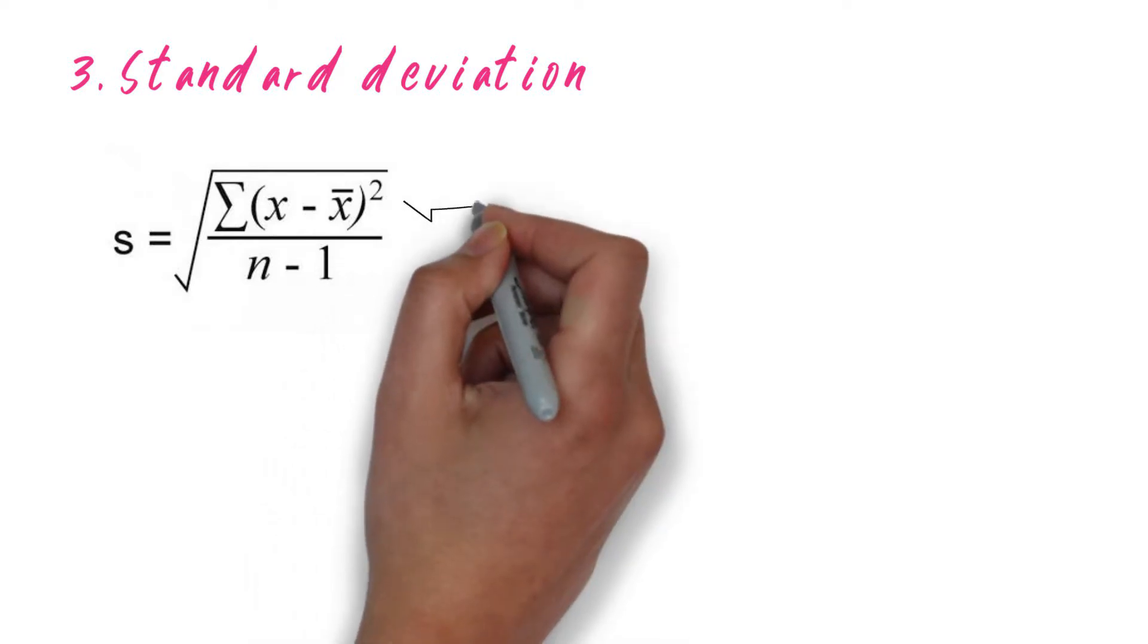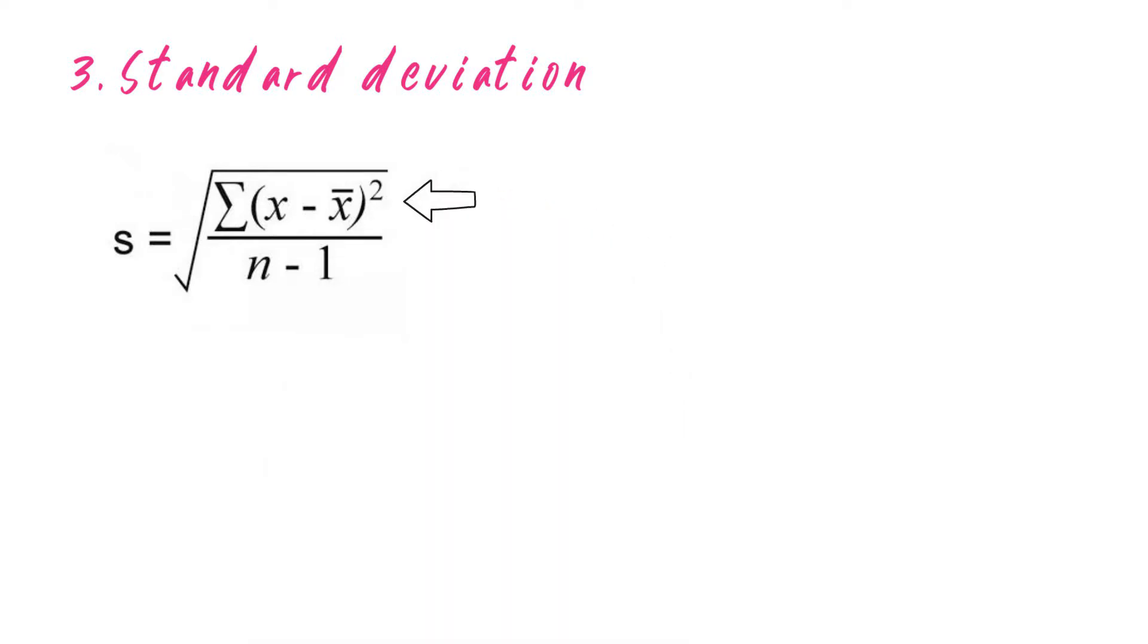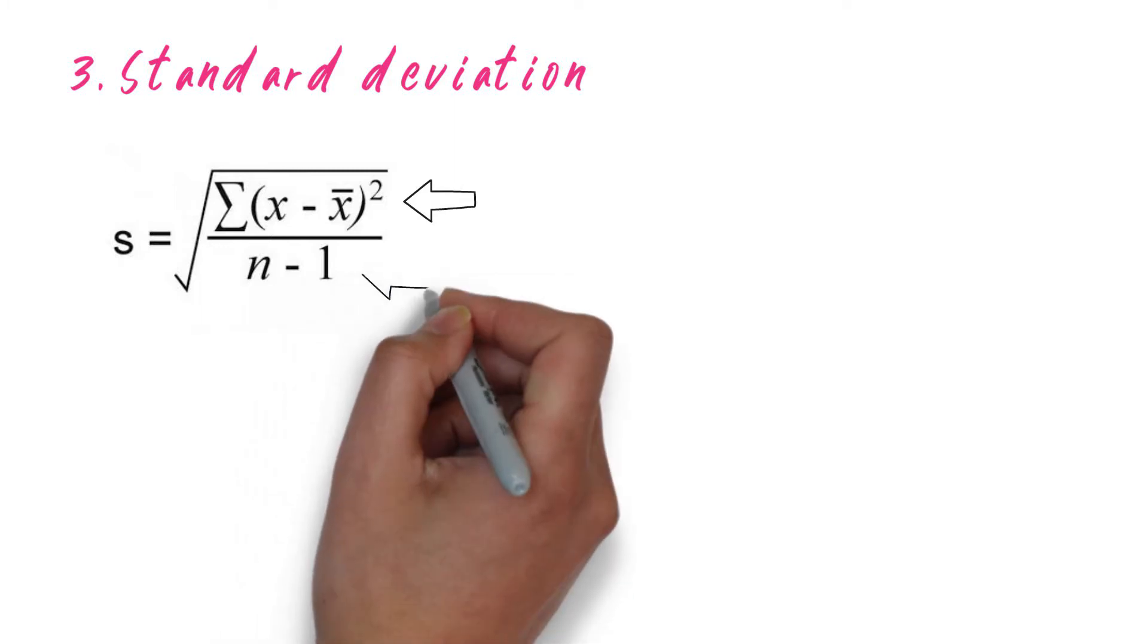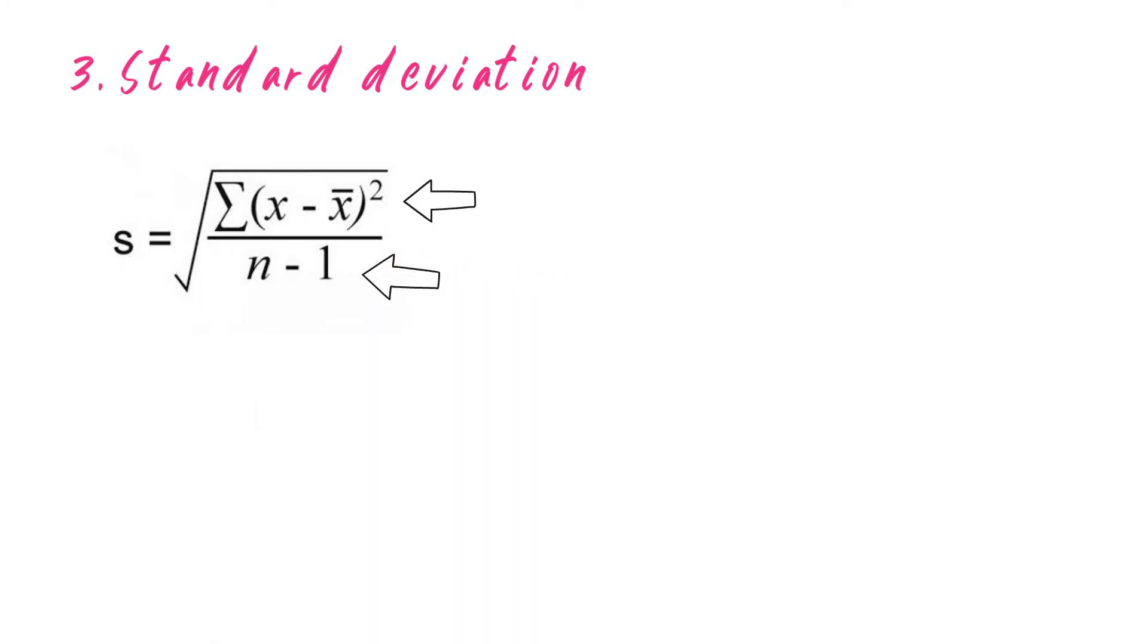Finally we have standard deviation. Have a look at the formula for standard deviation. As you can see, the upper part of the formula is sum of squares. When the lower part gets added, it becomes variance. And finally when you add the square root to it, it becomes standard deviation.